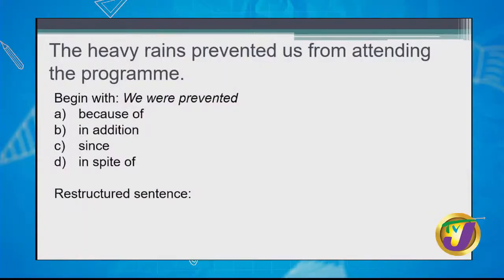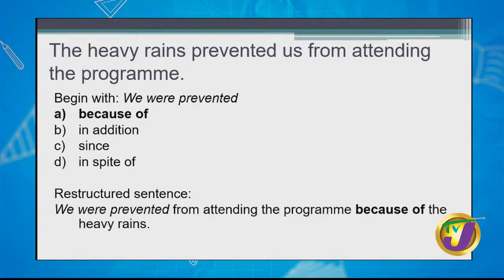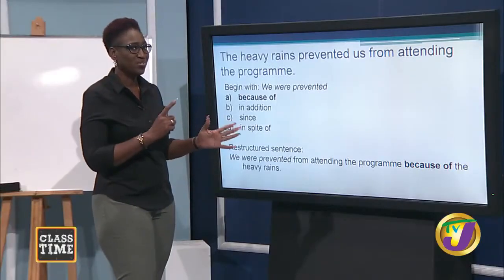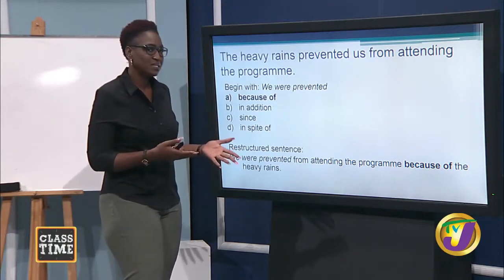Example 4: 'The heavy rains prevented us from attending the program.' Start with 'We were prevented.' Writing the sentence: 'We were prevented from attending the program...' — would you use 'because of,' 'in addition,' 'since,' or 'in spite of'? The answer is 'because of.' New sentence: 'We were prevented from attending the program because of the heavy rains.' You've rewritten the sentence with the same meaning, using a different starting phrase.